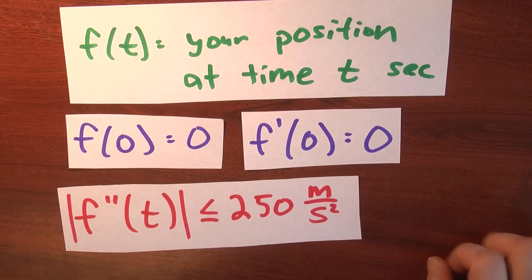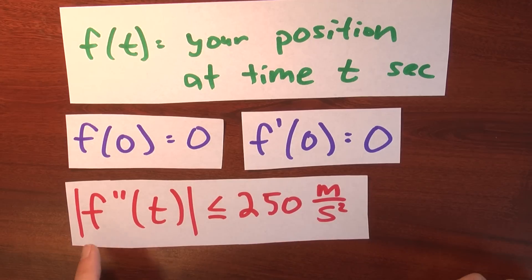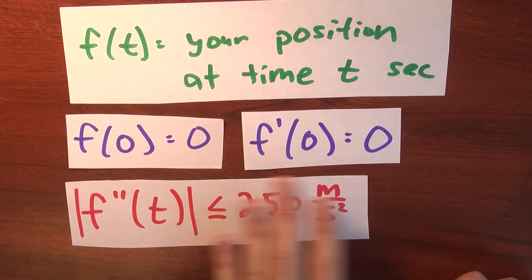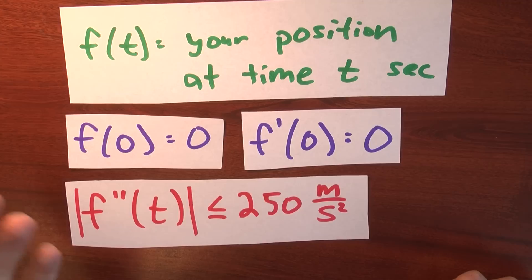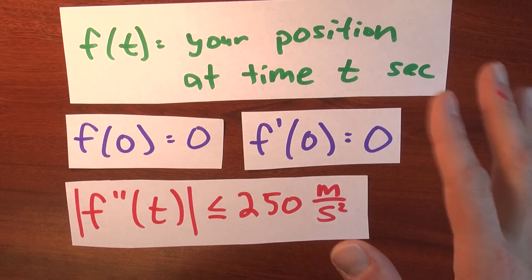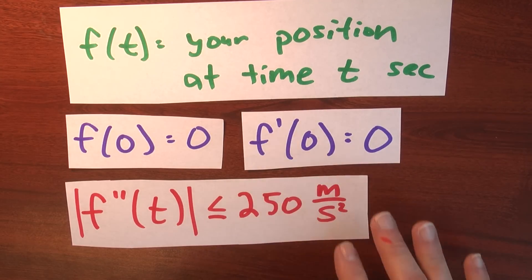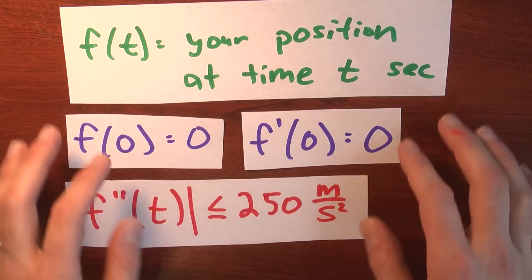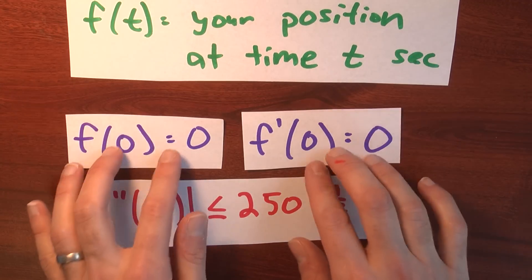And I'd prefer that we survive the experience. So I'd like to control the acceleration that we experience. So the second derivative of f, at any time t, is no bigger than 250 meters per second squared. This is, you know, 25 g's or so. And I think humans don't do so well above 25 g's. So this is a reasonable thing if you want to make this a healthy trip.